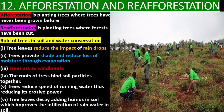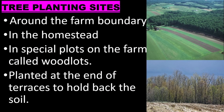Role of trees in soil and water conservation: tree leaves reduce the impact of raindrops; trees provide shade and reduce loss of moisture through evaporation; trees act as windbreaks; the roots of trees bind soil particles together; trees reduce the speed of running water, reducing its erosive power; and tree leaves decay, adding humus to soil which improves infiltration of rainwater. Trees are planted at the farm boundary, in the homestead, and in special plots called woodlots.